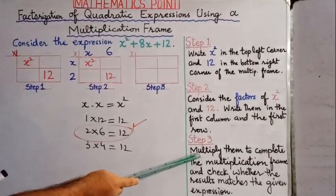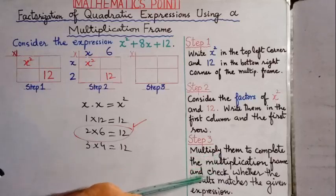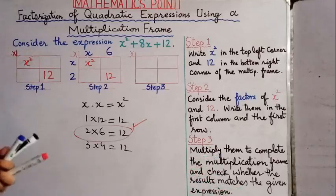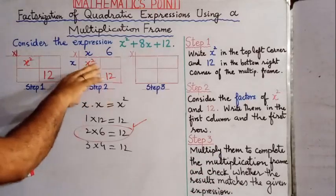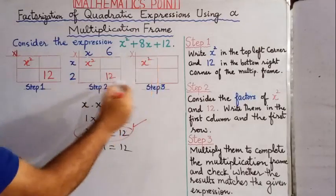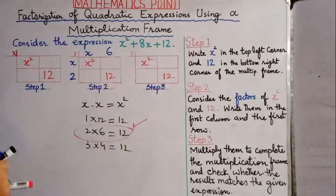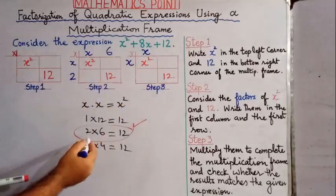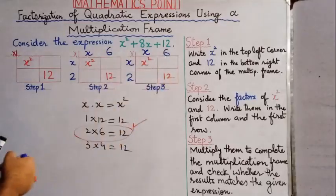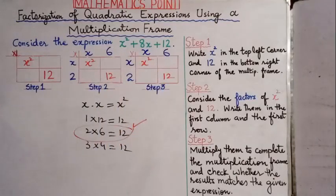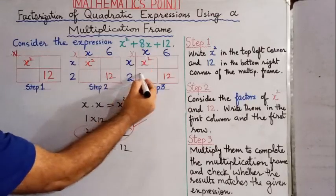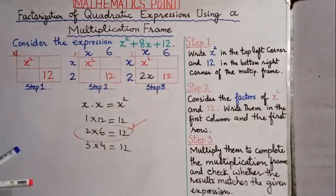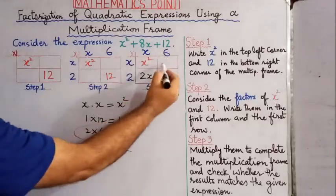In step 3, multiply the values to complete the multiplication frame and check whether the result matches the given expression. We have x² in the top left, 12 in the bottom right, factors x and x in the row and column, and 2 and 6 as factors of 12. Now multiply: 2 with x gives 2x, and x with 6 gives 6x.